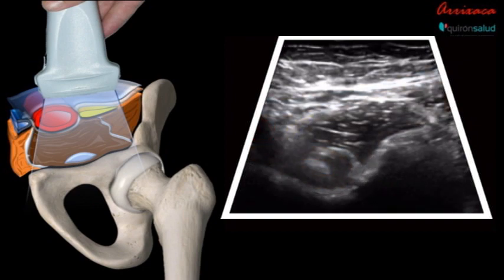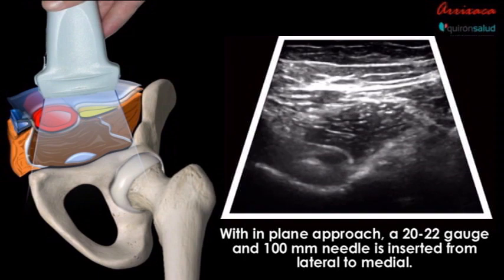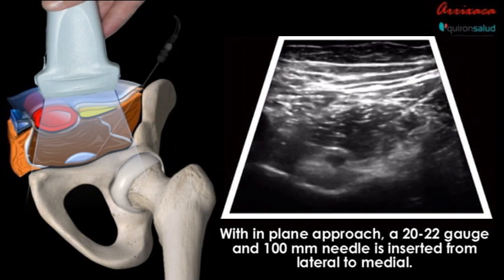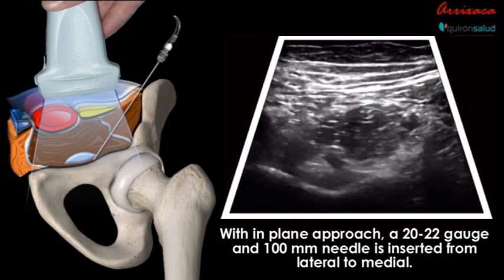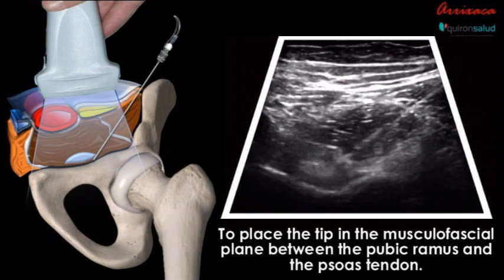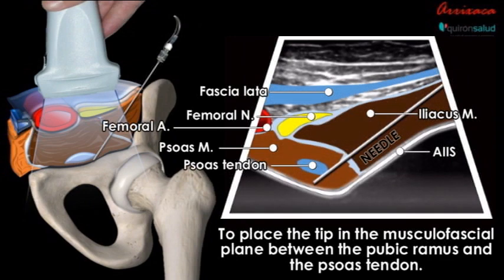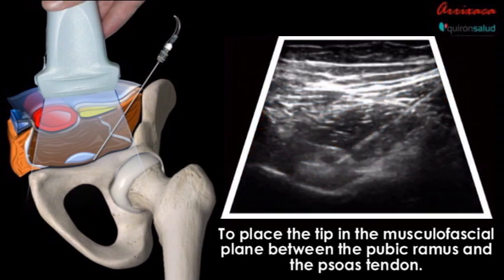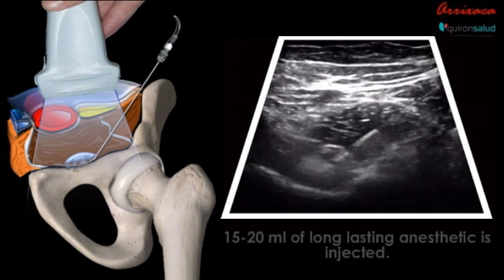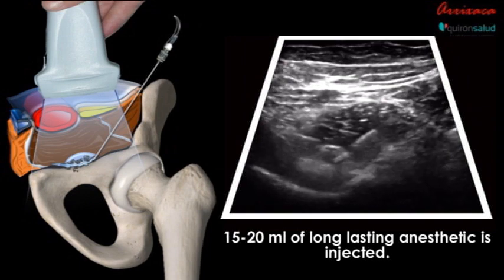We clearly identify our anatomical references again, and a 20 to 22 gauge, 100 millimeter needle is inserted in-plane from lateral to medial. We should be careful not to pass through the psoas tendon during puncture, depositing 15 to 20 milliliters of long-lasting local anesthetic between the psoas tendon and the pubic ramus, while observing the displacement of the psoas tendon.